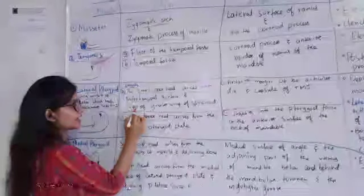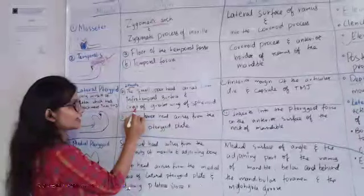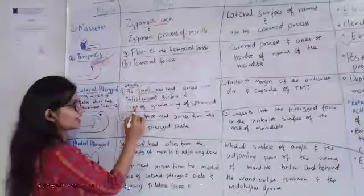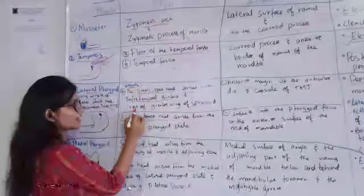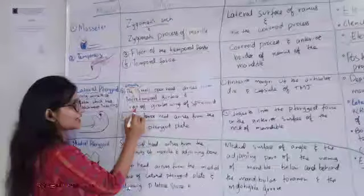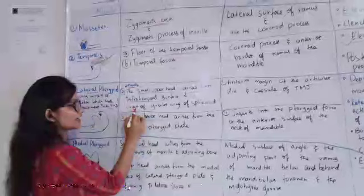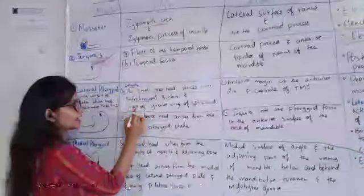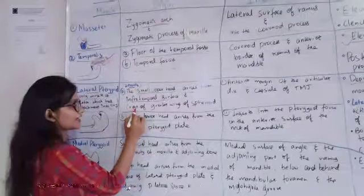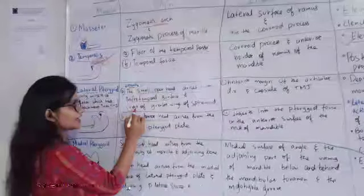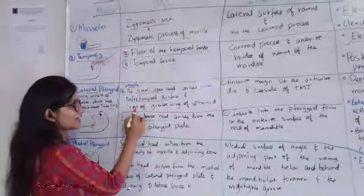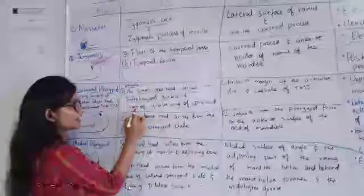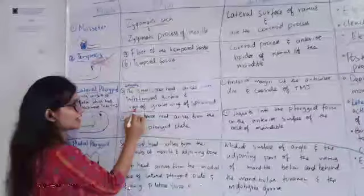The TMJ insertion — the articular disc and capsule. Then there is the large lower head. The large lower head arises from the lateral pterygoid plate, which is a part of the sphenoid bone. Its insertion is into the medial surface — the ramus medial surface — specifically into the pterygoid fovea on the anterior surface of the neck of the mandible.